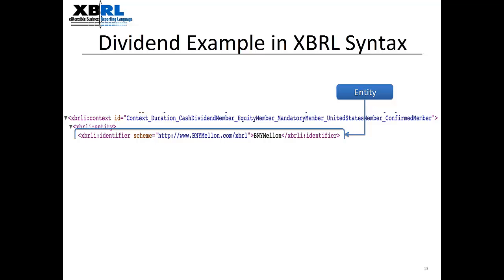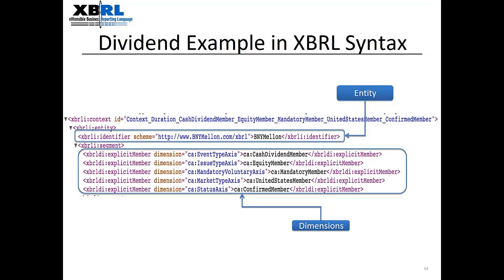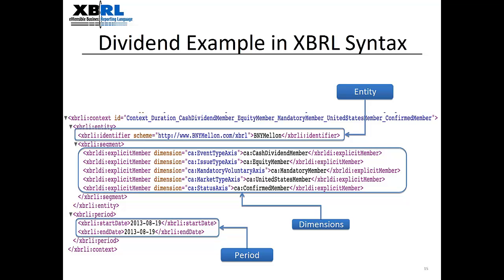Here's an actual XBRL document. This section tells us that BNY Mellon is identified as the ADR depository distributing the message. The dimension section tells us the event is a cash dividend, it's an equity, the event is mandatory, it's for U.S. equity markets, and the action is confirmed. The period section tells us when the event took place. A single data point can have all this information associated with it, from the issuer straight to the investor who needs to take action on it.